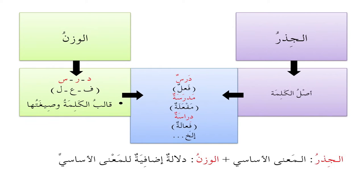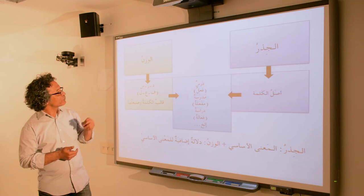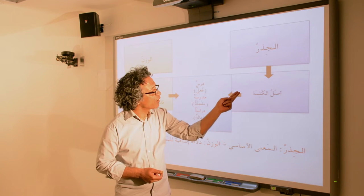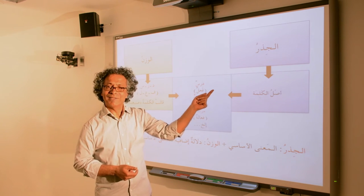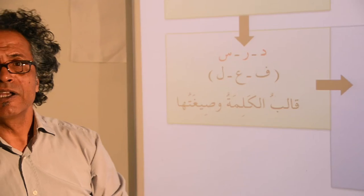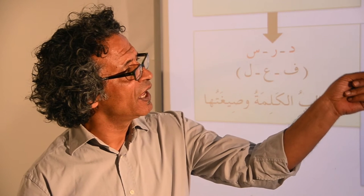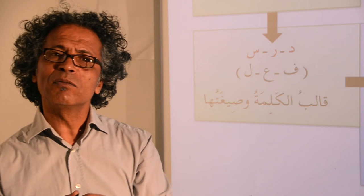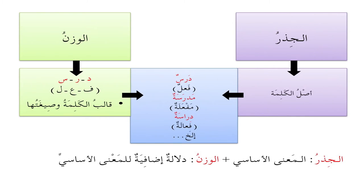عندنا هنا مثال: دارسة. So the root that we're working from is دال-را-سين. Look at the words that we have here and you will see that the three letters of دال-را-سين are repeated in these words, yet each one of them has a different form or a different mold within which it works.